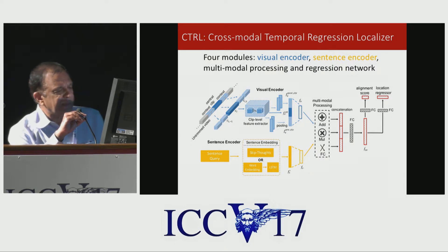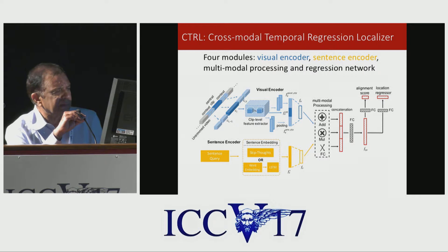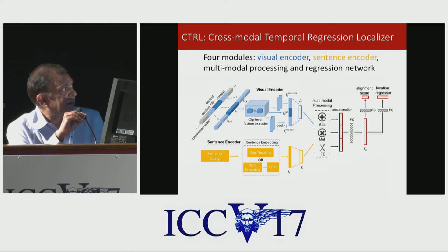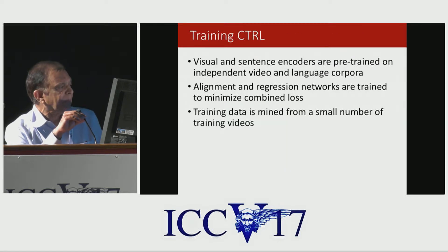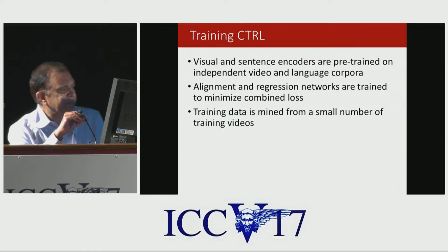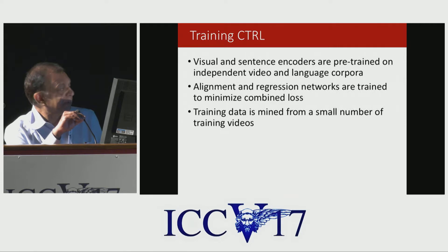Finally, a combined feature vector is produced, and then we learn how to score it for alignment as well as regress the interval so that the interval is more correct than the clip itself. The visual and sentence encoders are trained independently, while the alignment and regression networks are trained to minimize a combined loss.